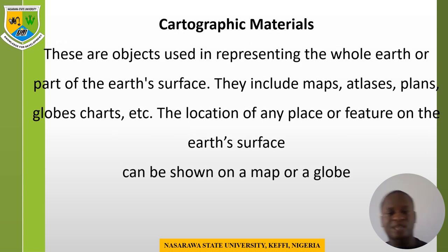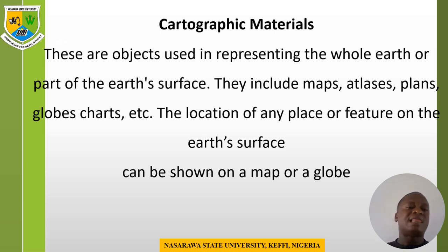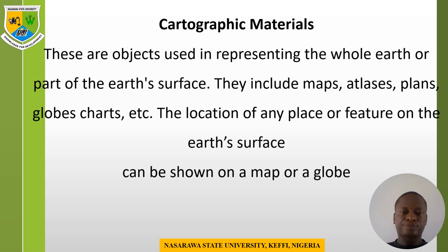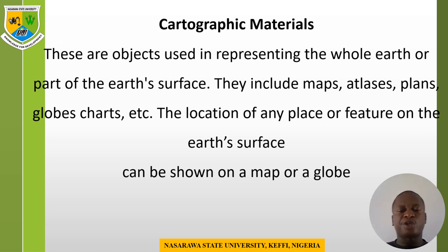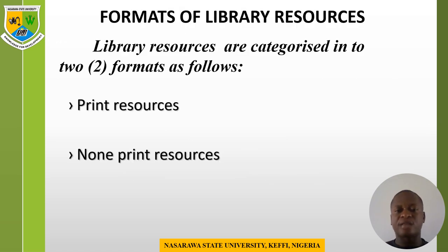Photographic and cartographic materials are objects used in representing the whole earth, such as your map, atlas, plans, globes, and charts. These are known as geographic sources. We have such materials in the library, and they contain information that can satisfy the information needs of users.